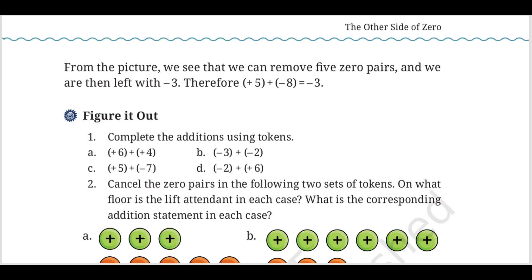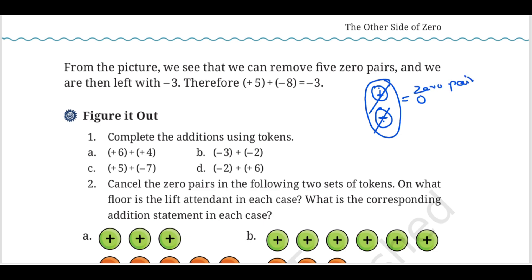In 10.2 we have one more concept: that is the zero pair. Plus and minus are inverse — plus and minus cancel each other, giving value zero. So we have a pair whose answer is zero, and we call it a zero pair. Negative and positive when combined together give the answer zero — that is a zero pair.